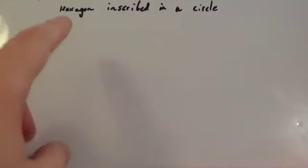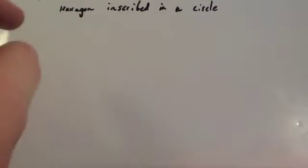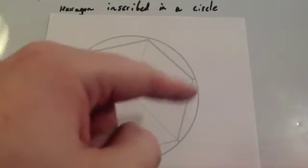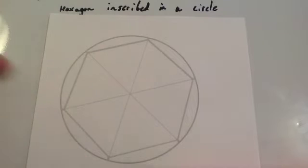In this video we're going to look at how to construct a hexagon which is inscribed in a circle. So this is a hexagon inscribed in a circle. You've got your circle and you've got your hexagon which has your six points on the circumference of the circle.